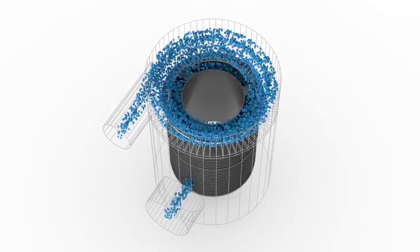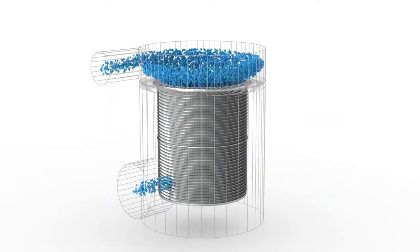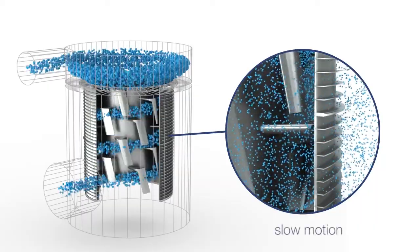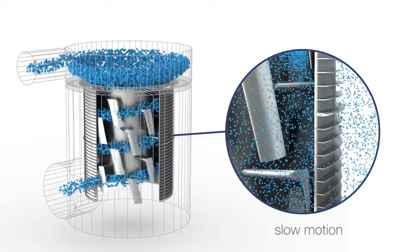In the intake area of conventional screens, the suspension is accelerated by tangentially arranged nozzles. To keep the basket clear, a high rotor speed is necessary to achieve the required differential speed between rotor and suspension.